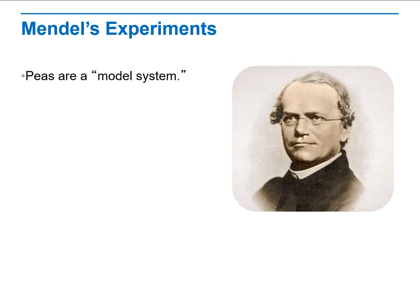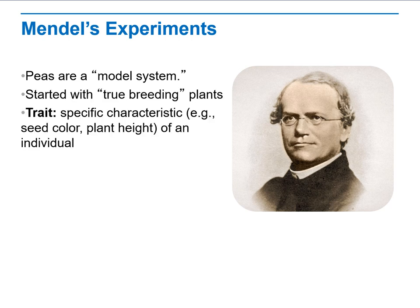Mendel's experiment used pea plants as a model system. He started with true-breeding plants, which consistently pass their traits to offspring. When we talk about traits, traits mean a specific characteristic like color, height, or length of a specific individual.